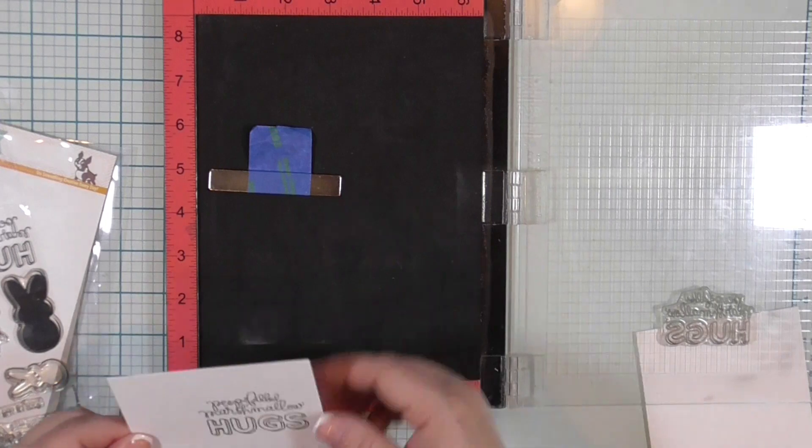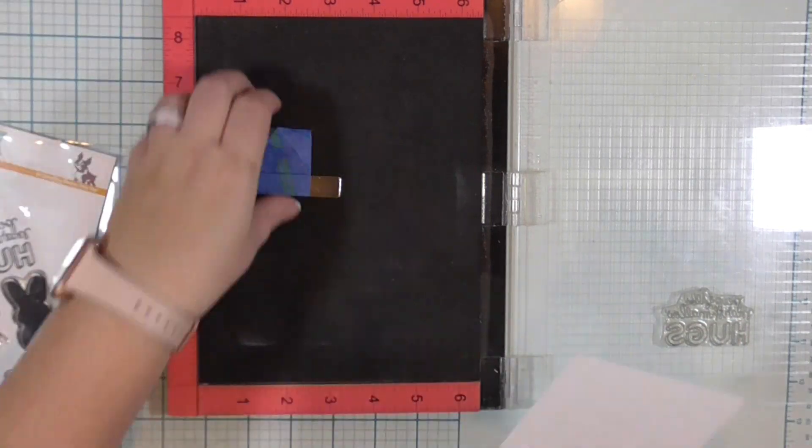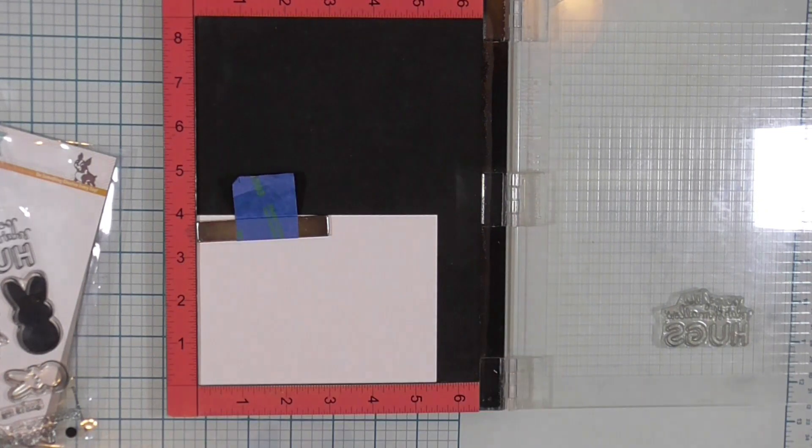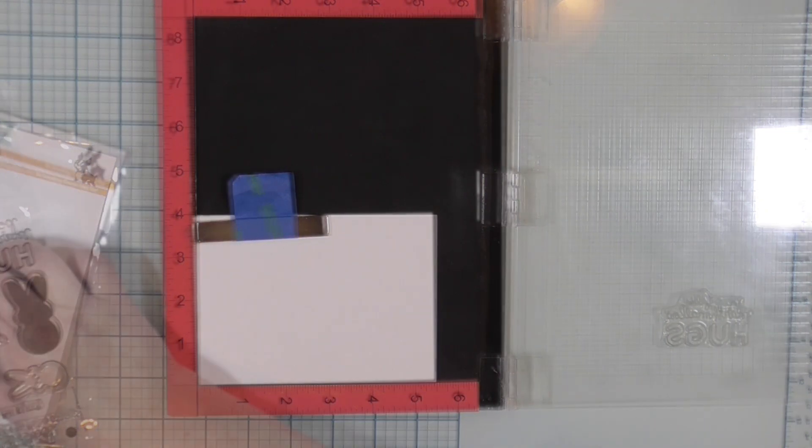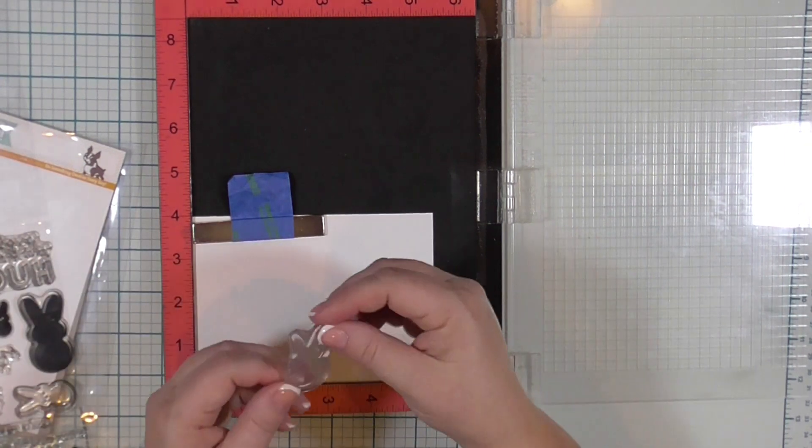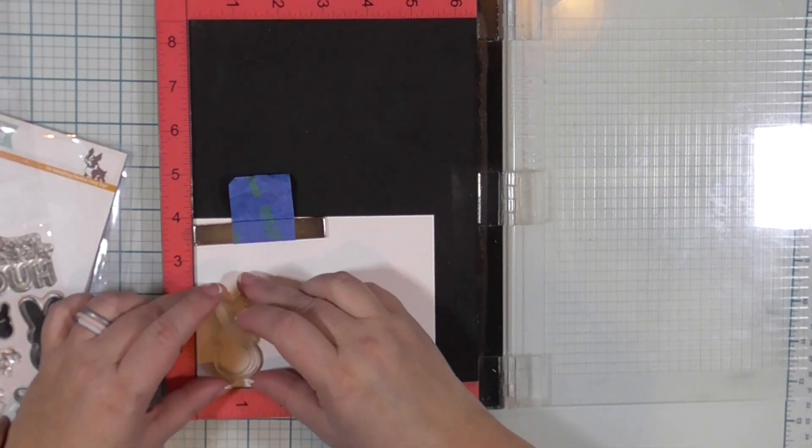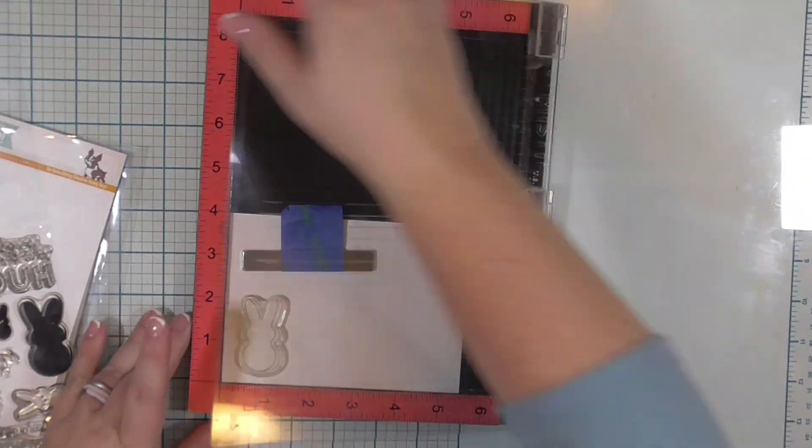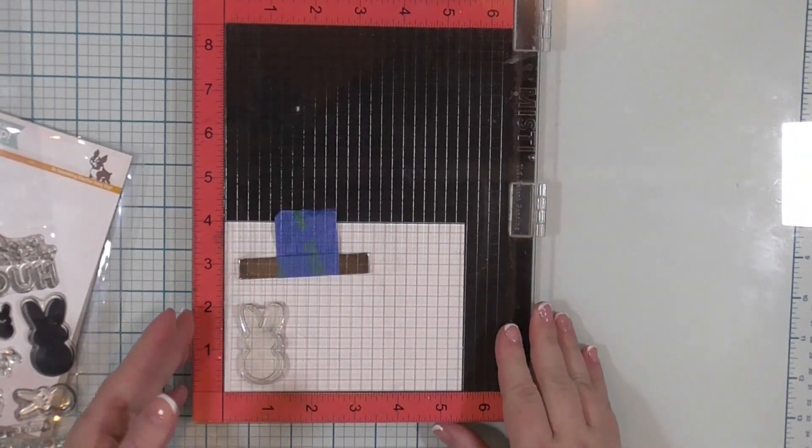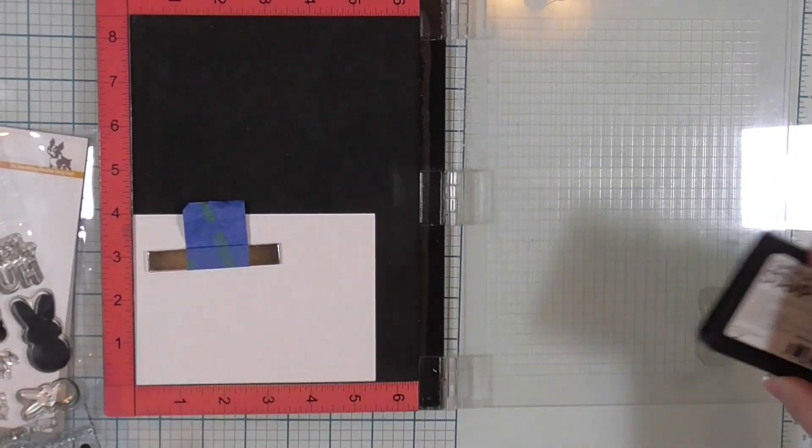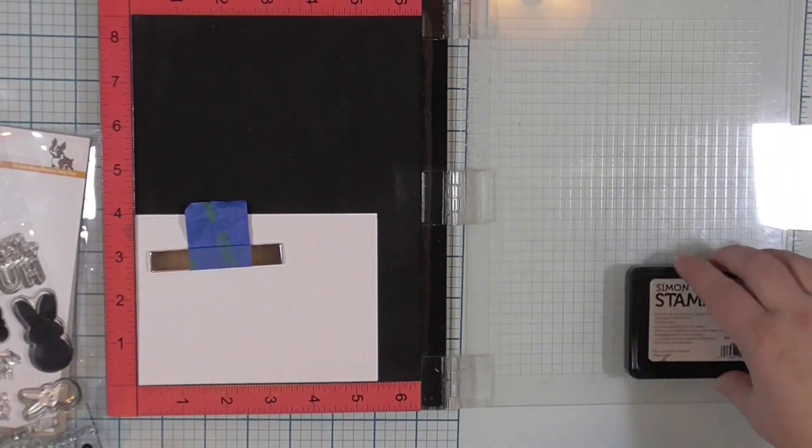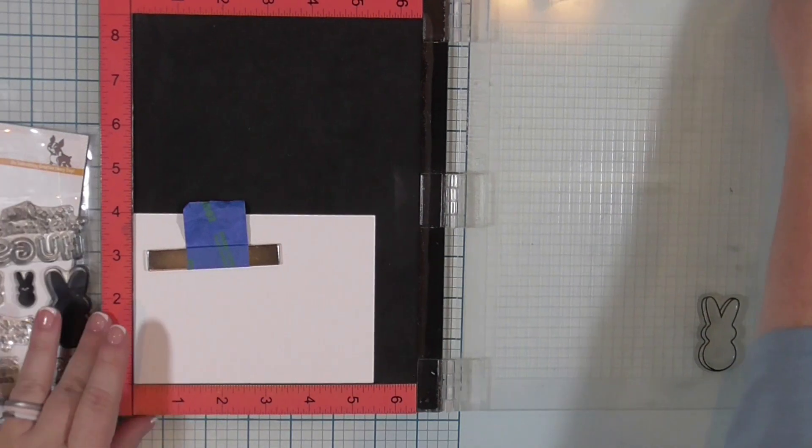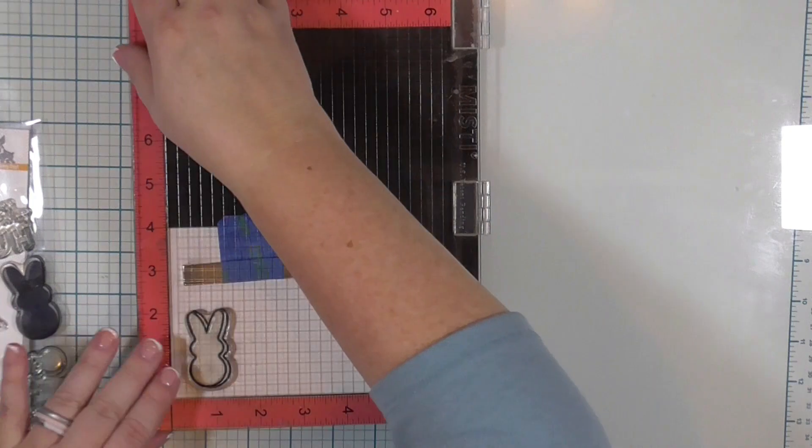I'm going to go ahead and put this off to the side and hopefully that will dry. I'm going to add another piece of Neenah cardstock in my Misti so that I can stamp my Marshmallow Peeps. Now, I would have been really smart to turn my Misti the other direction and put the stamp on the paper in a way that I could just slide the paper down. But I did not do that because I was not thinking clearly, obviously. But I am going to stamp three bunnies on this card panel. I want to have three Peeps on my card.